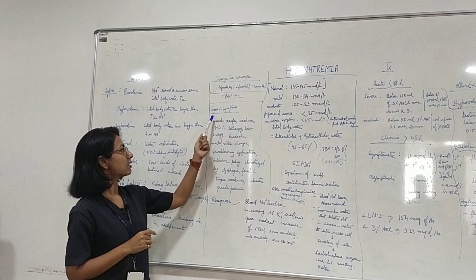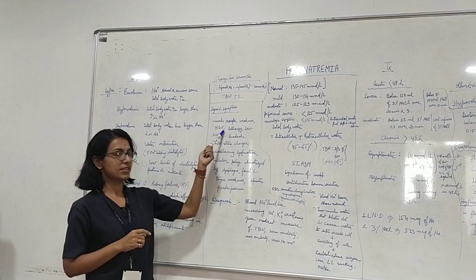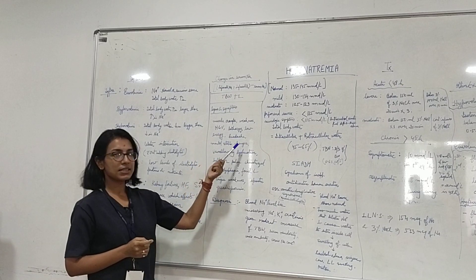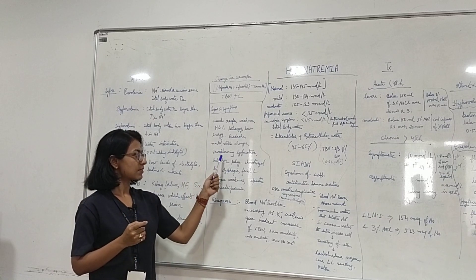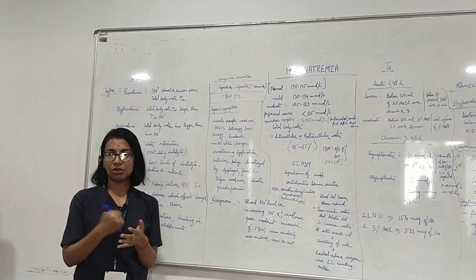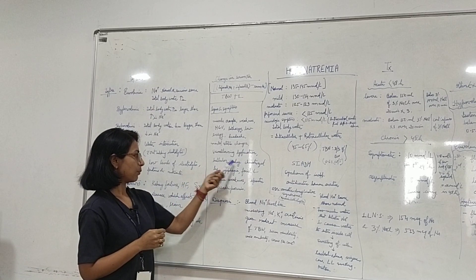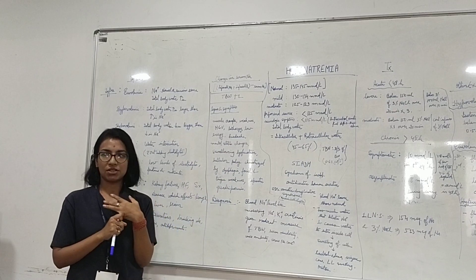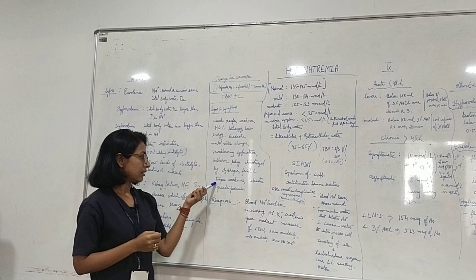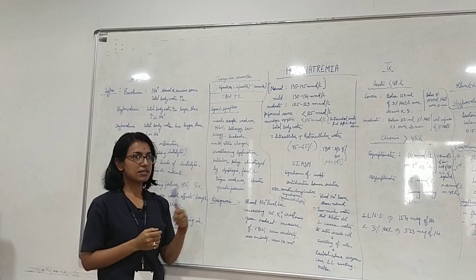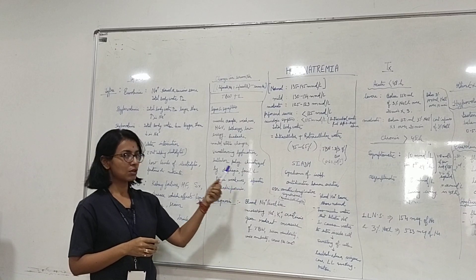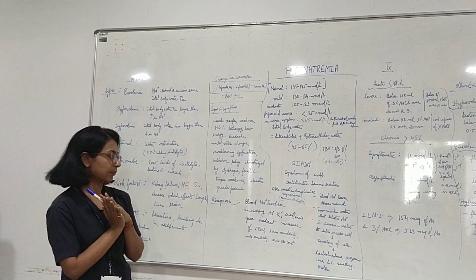Signs and symptoms include muscle cramps, weakness, nausea and vomiting, lethargy, low energy, and headache. In severe cases, mental status changes and swallowing dysfunction can occur. If the patient is also having stroke or seizure or other neurological disorders, they can present with bulbar palsy, characterized by dysphagia or weakness in facial or tongue muscles, as typically seen in stroke patients.